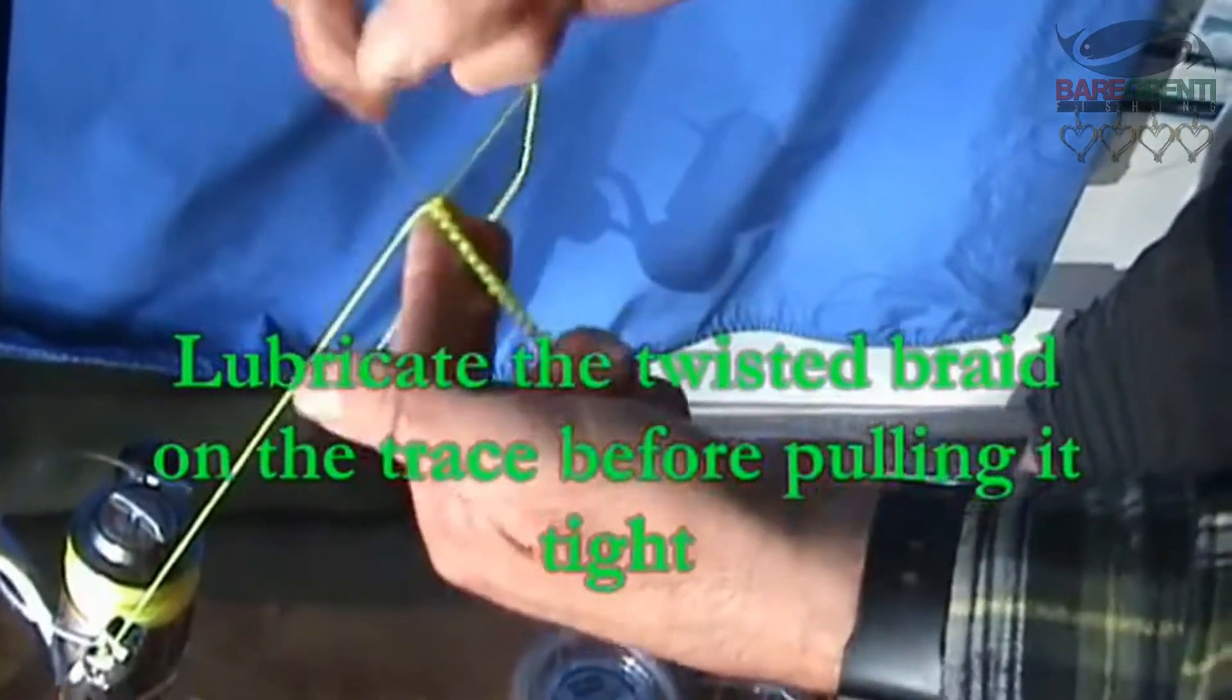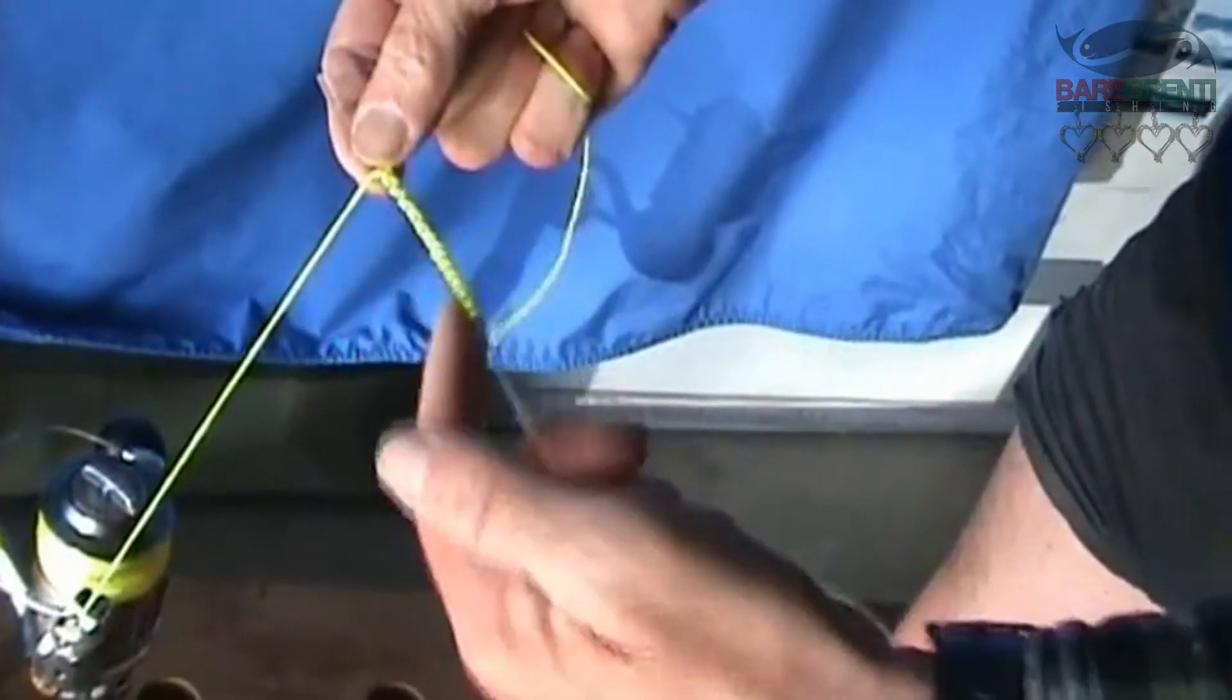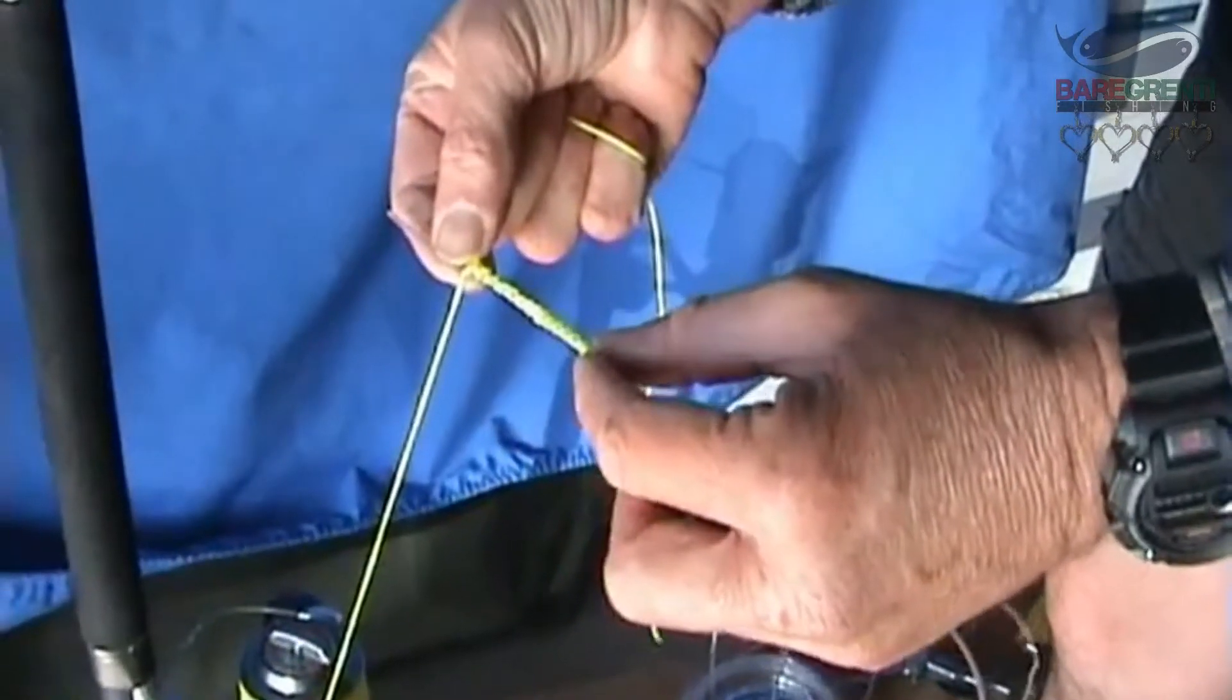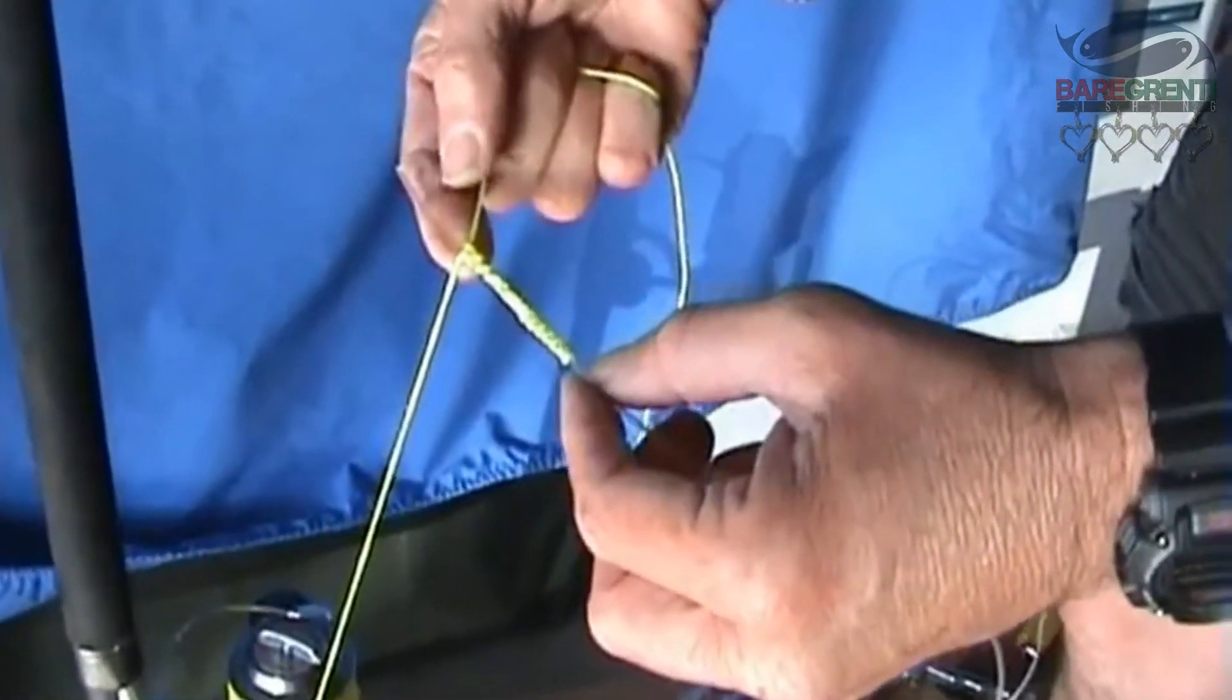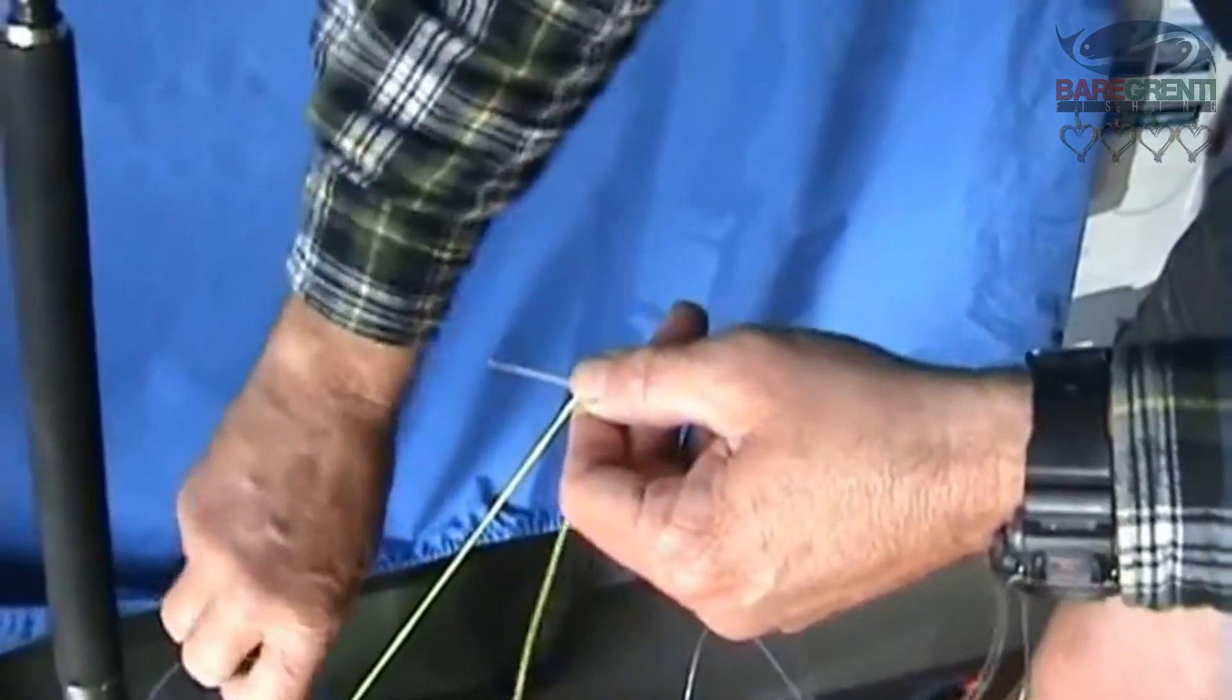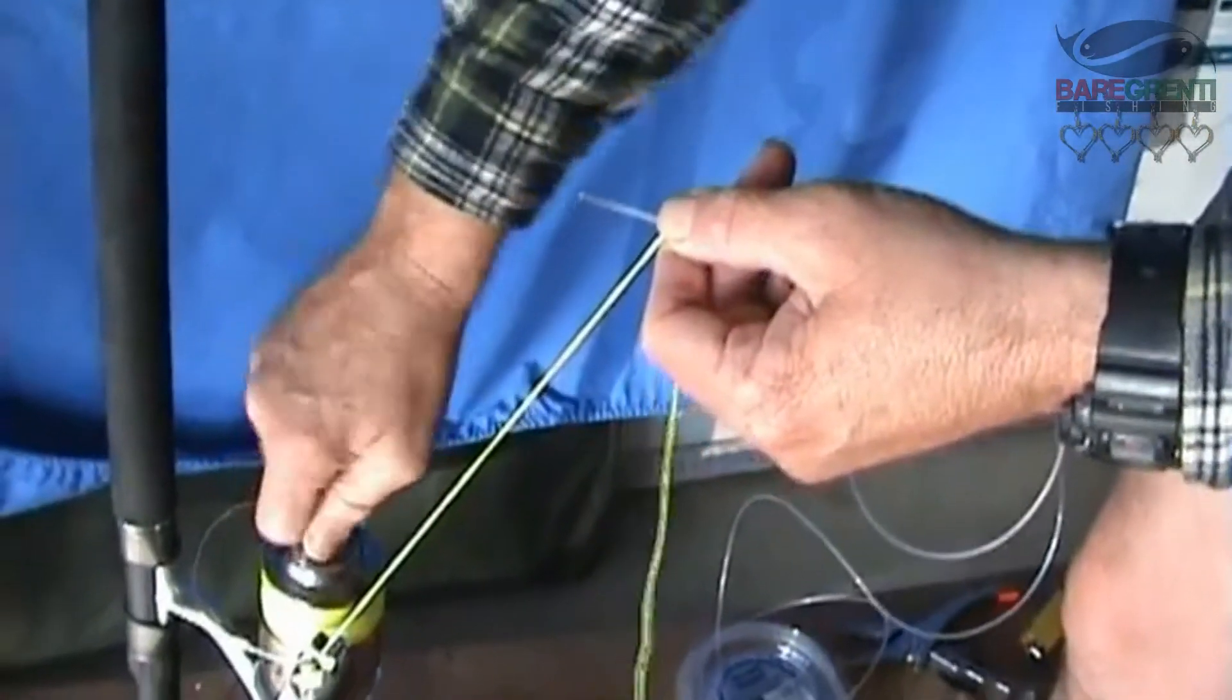Now what you're going to do is you're actually going to lubricate the line. You're going to pull it up tight. By lubricating it you're going to hopefully reduce friction and friction burn on the lines. I've lubricated up like that. Crank the drag up on my reel.